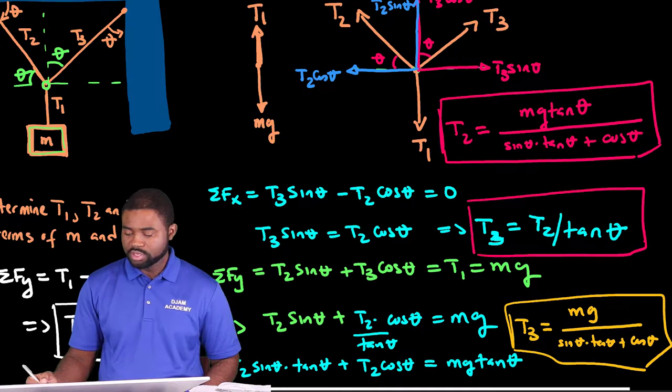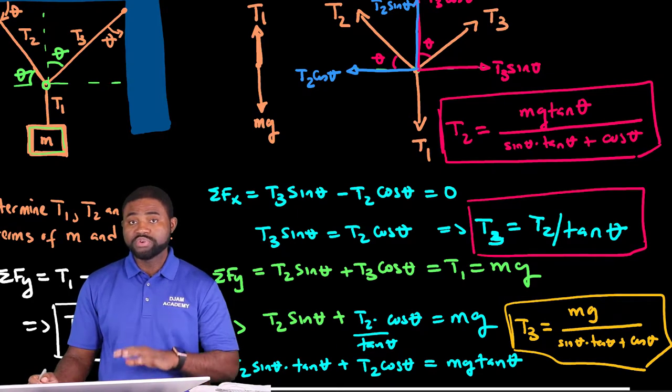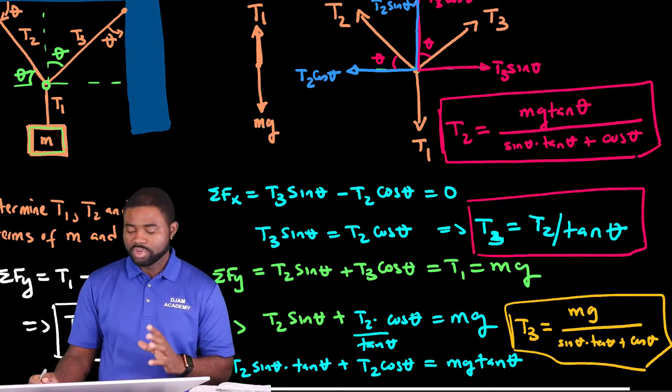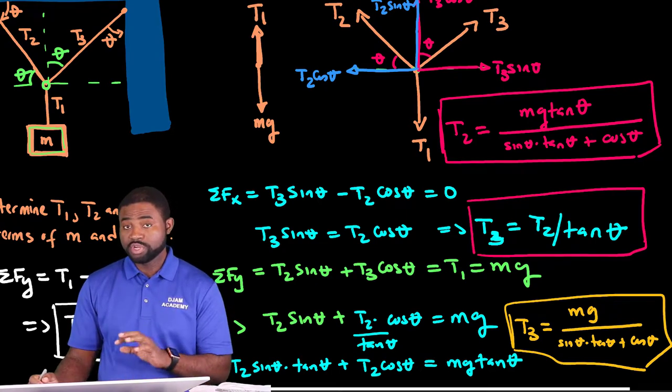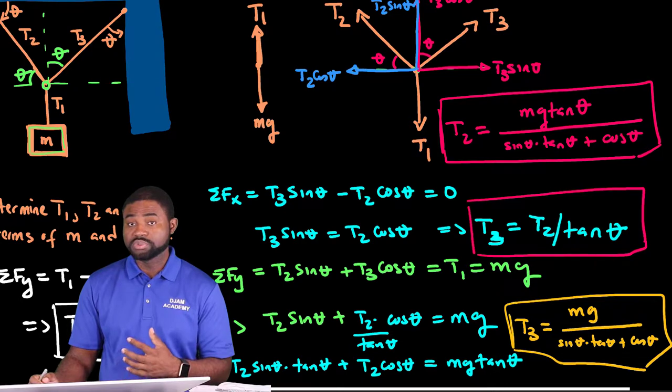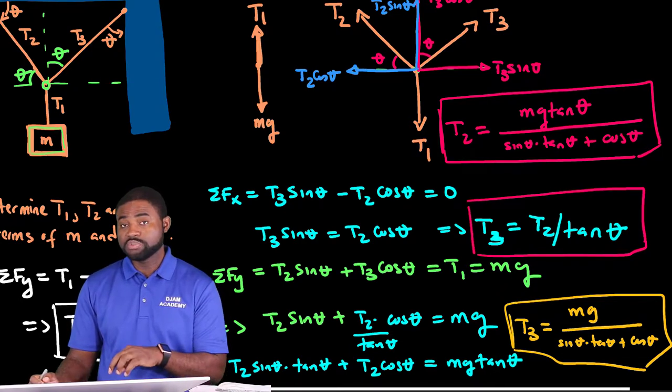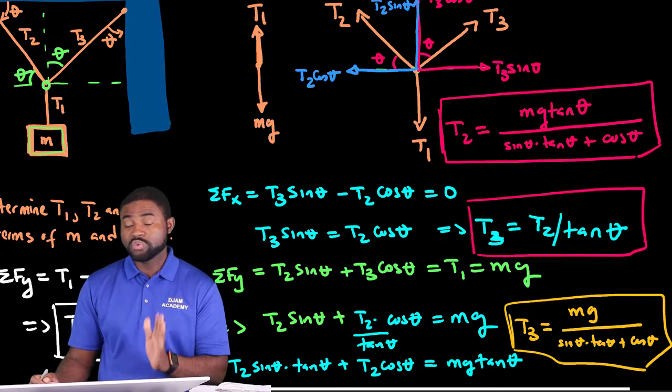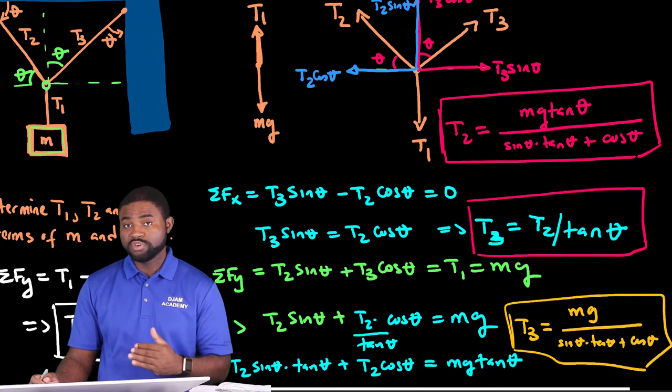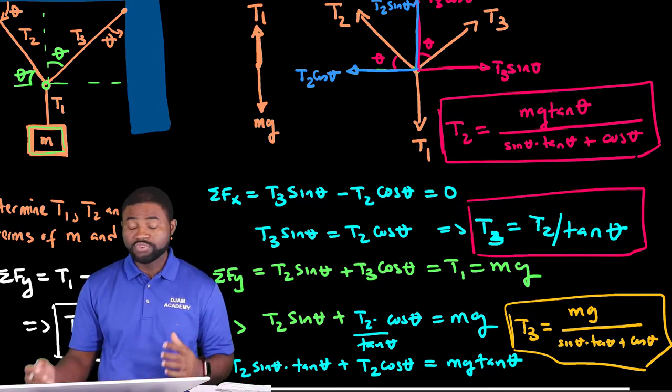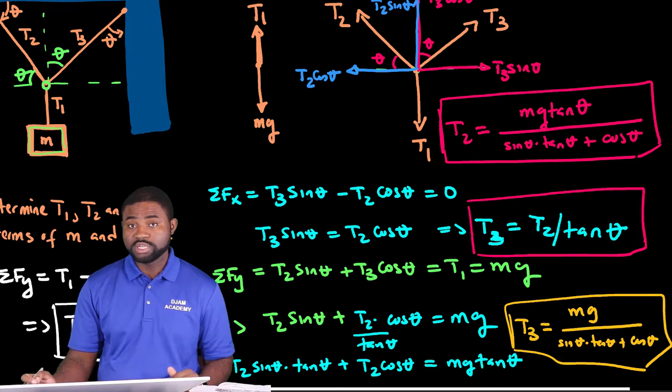You see, the problem actually just requires you to draw an accurate free body diagram. When you are done with your free body diagram, the next step is to write down Newton's second law equation for each object along the x and along the y direction. When you do that accurately, the next step will just be for you to solve the variables. If you do this all the time, you will always get it right.